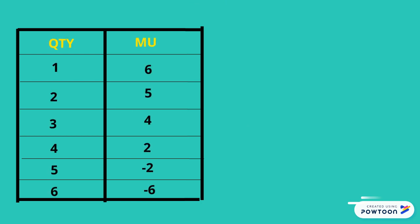The following table shows quantity consumed with its marginal utility, which is the extra satisfaction. For example, if you consume the first unit, it gives you extra satisfaction of 6 units. If you consume 2 units, the additional unit gives you an extra satisfaction of 5, and so on.